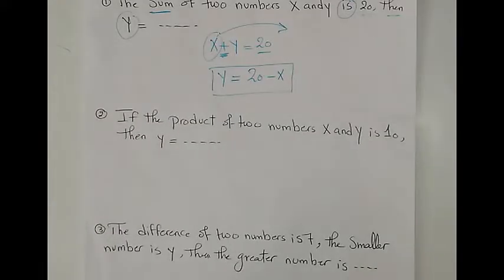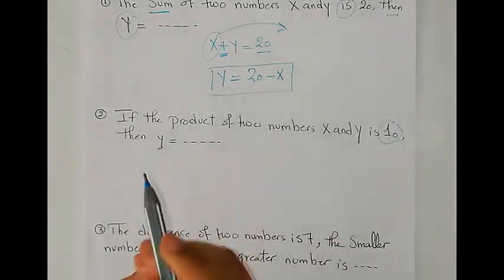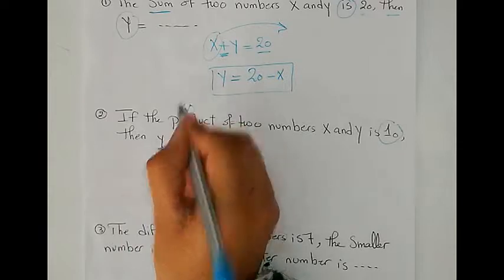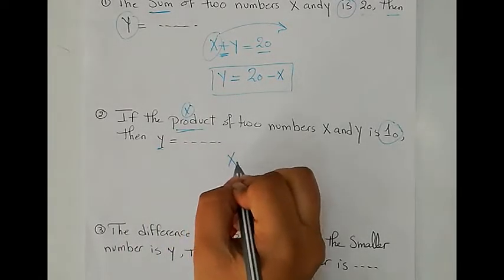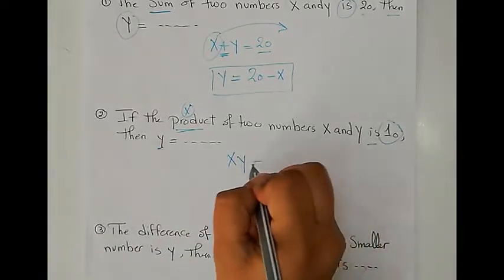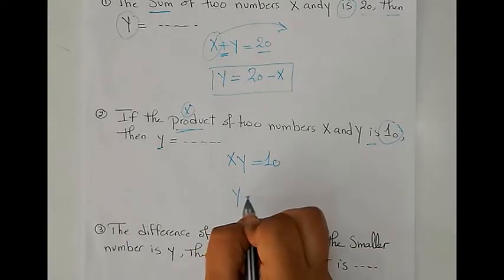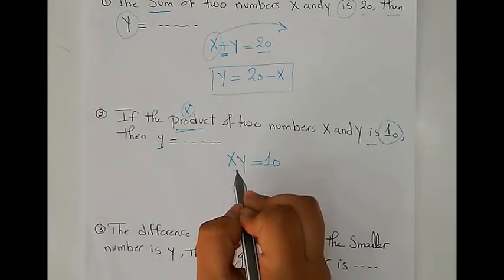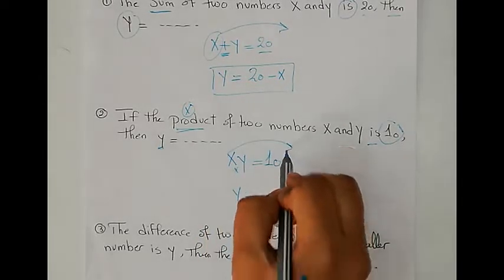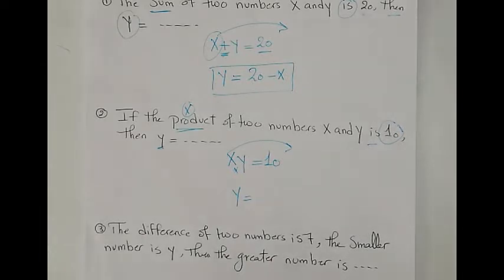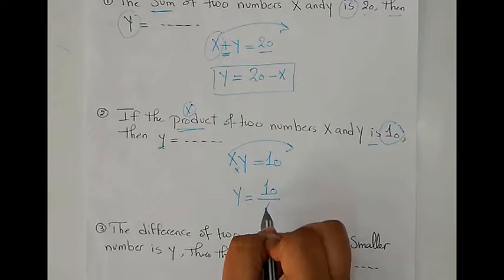Question two: if the product of two numbers X and Y is 10, then find Y. As you know, product means times, so X multiplied by Y equals 10. To get the value of Y, we isolate Y on one side. The sign is multiplication, so we move X to the other side with the inverse operation, which is division. Therefore, Y equals 10 divided by X.